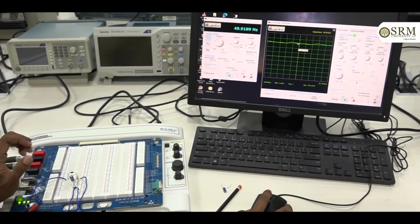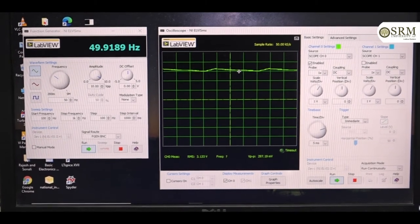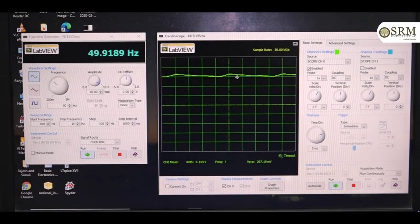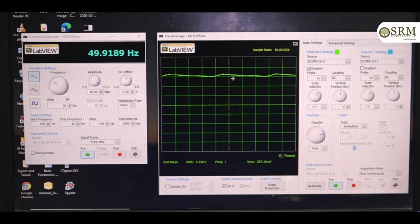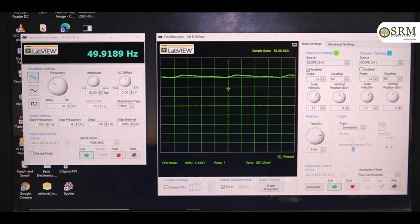Yeah, here the signal is looking like completely DC while using 220 microfarads capacitor. This is the output of the half wave rectifier with capacitor 220 microfarads. Approximately looking like this signal, output signal is looking like DC signal. Thank you.